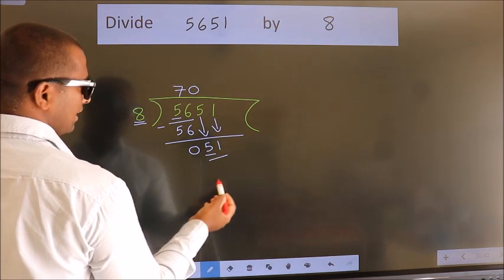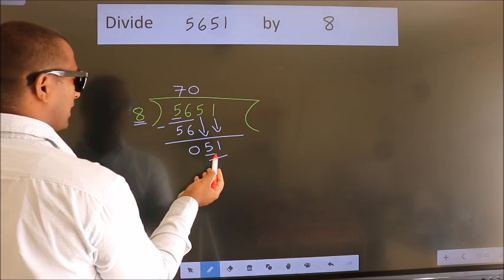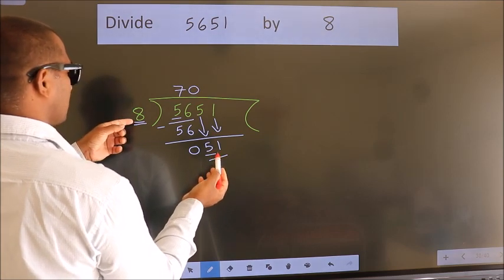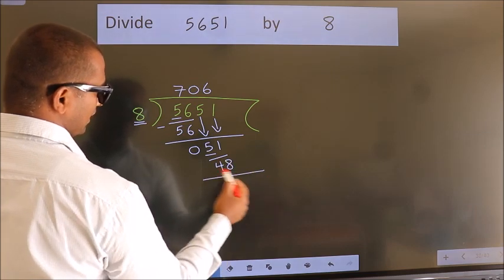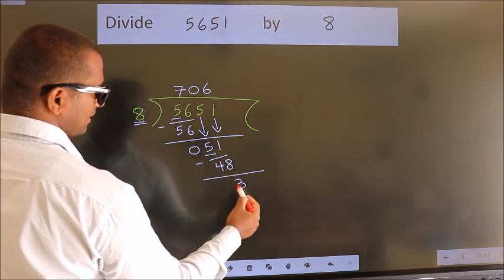So, 51. A number close to 51 in 8 table is 8 6 48. Now we subtract. We get 3.